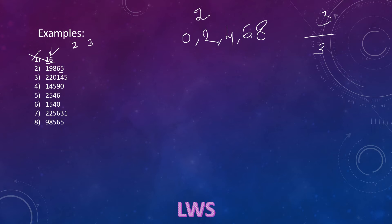19865 has units place 5, so 5 is not divisible by 2. So this is not divisible by 6. Again, units place is 5, so this number is not divisible by 2, thus not exactly divisible by 6.